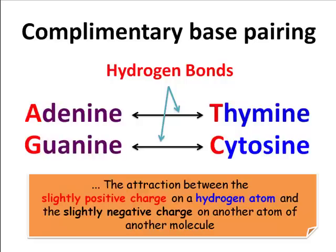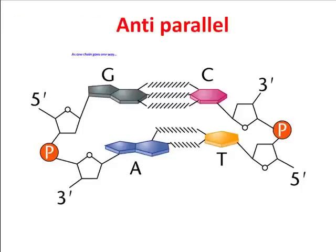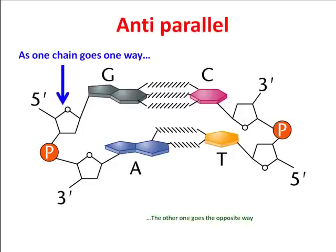Is there anything else we need to know about the structure of DNA? Only that it is anti-parallel. This means that as one chain runs one way, the chain on the opposite side runs the other way, causing the double helix shape.